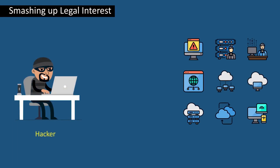Next is smashing up legal interest. The well-recognized organizations' networks are smashed to get the benefit of their favored organization. This is one of the prime and known motives of cyberattack. To deal with such scenarios, well-defined security goals must be present in the organization.